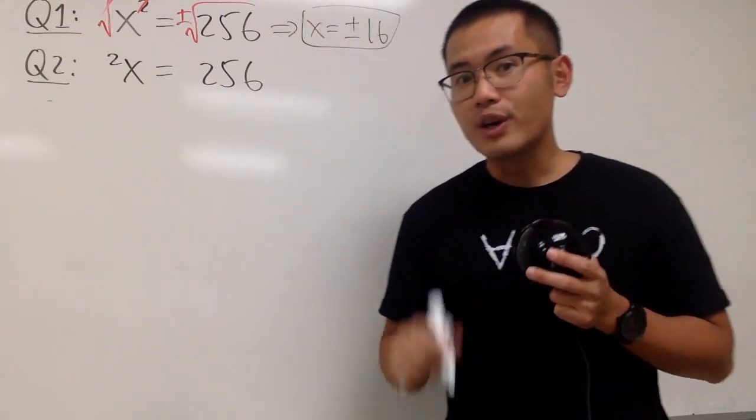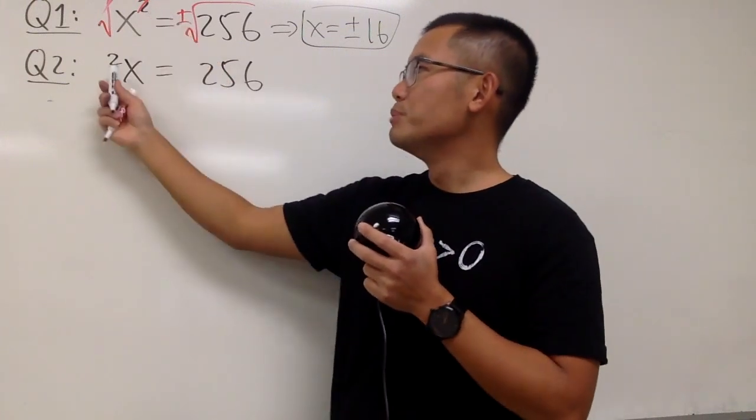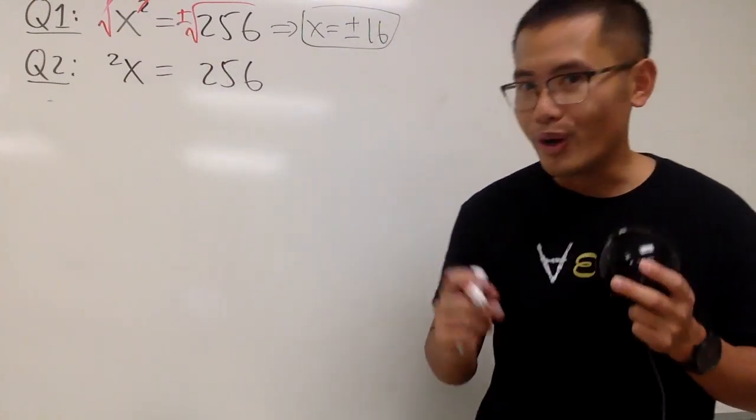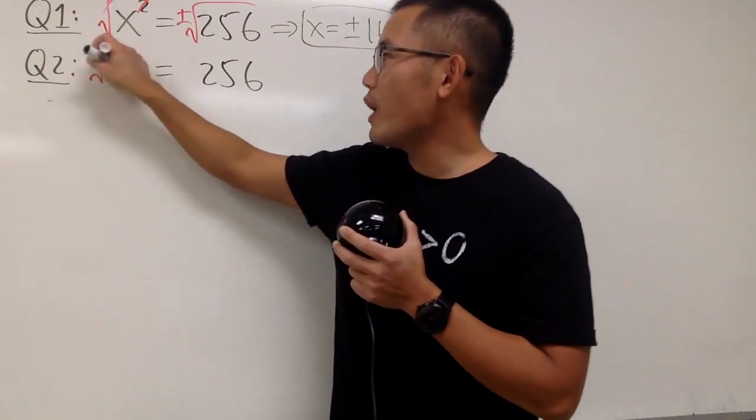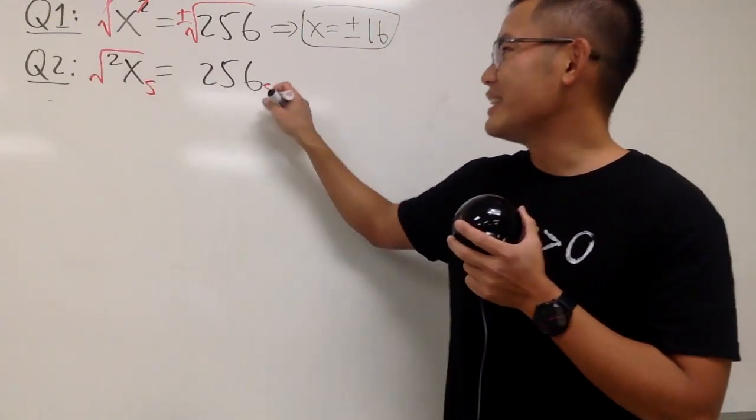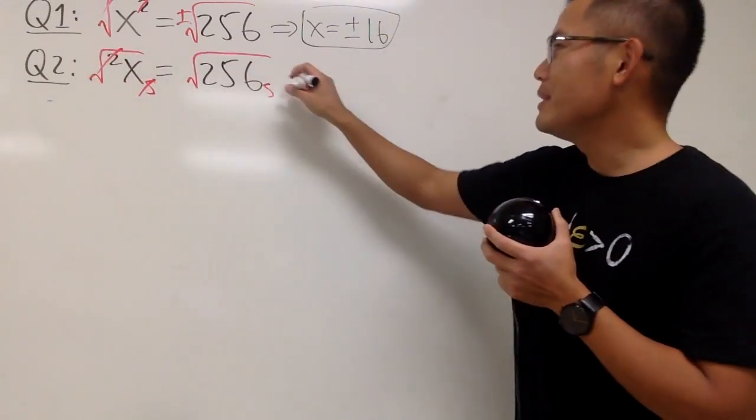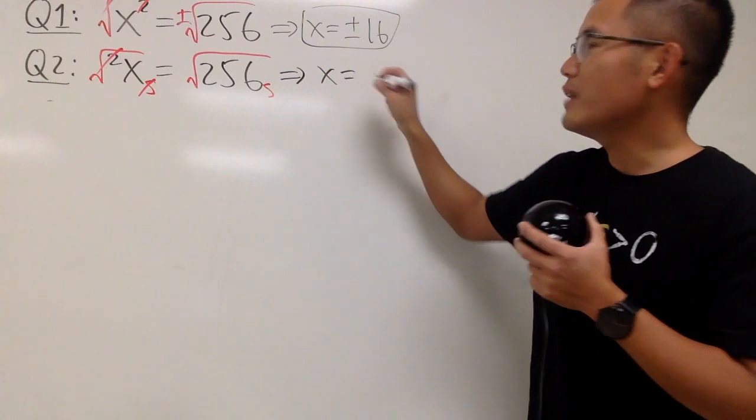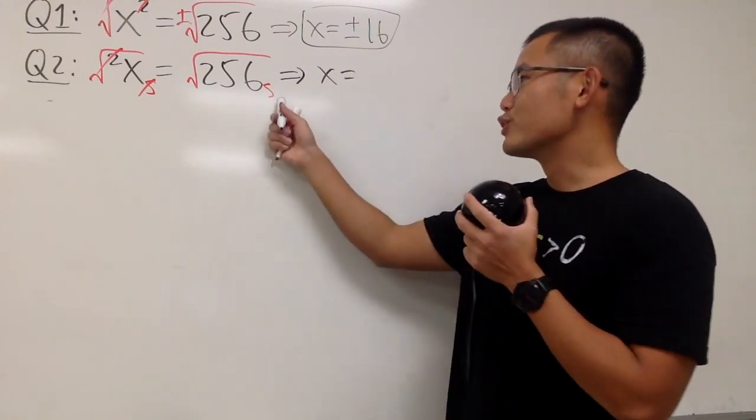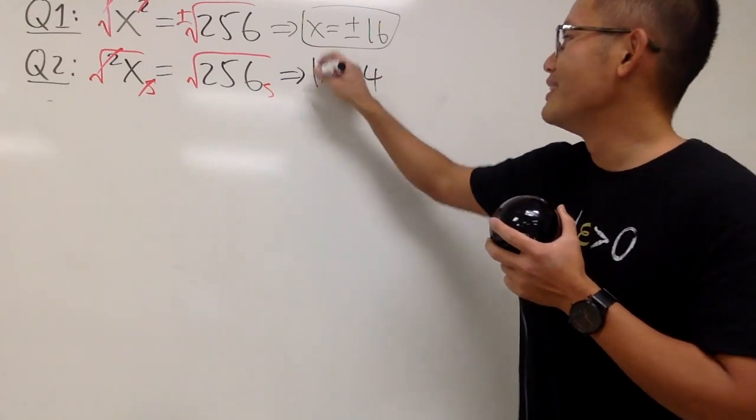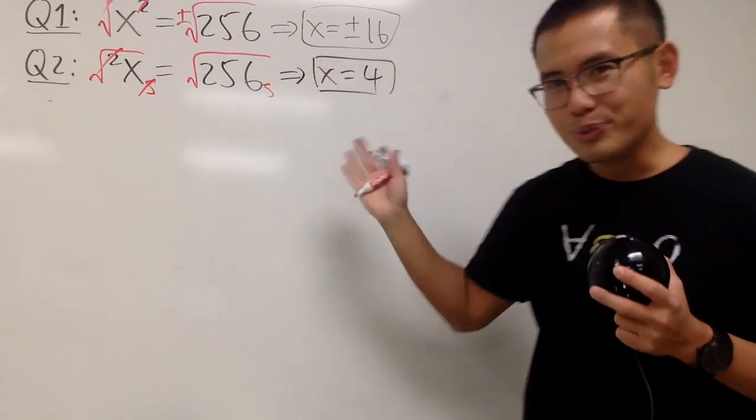But have you ever thought about what if the power moves to here instead? In this case, we can actually just take the super square root on both sides. And yes, this is a real thing, and this and that will cancel. Let me tell you that x is by itself, and we only have one number for it. The super square root of 256 is 4, like this. And this is super, super cool.